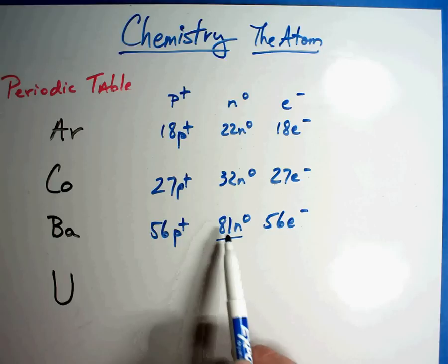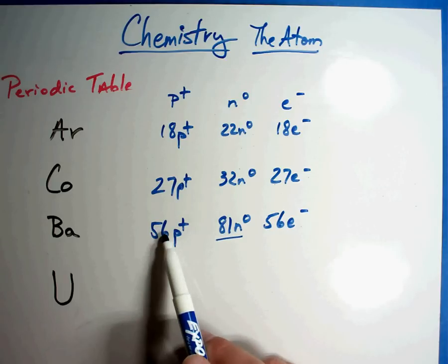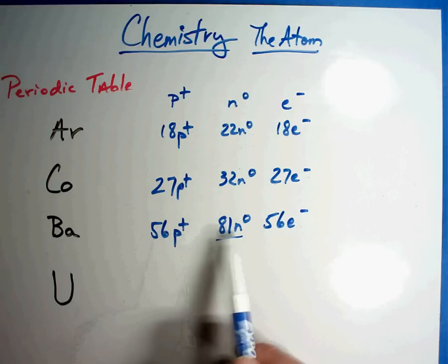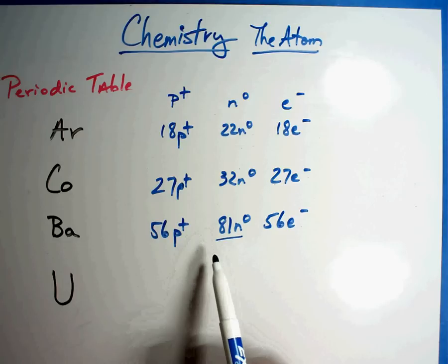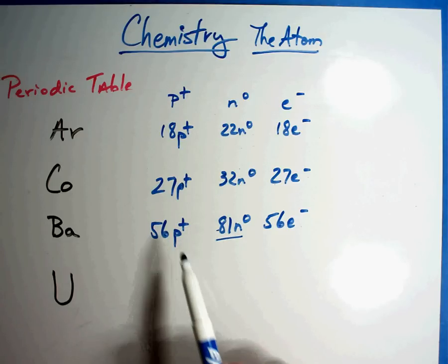Now, if you want to check yourself, you can always take this number and this number and add them together and you get 137 and that's the weight of barium on the chart. So if you want to check yourself, the proton and neutron number should add back to be the number that you saw in the periodic table.